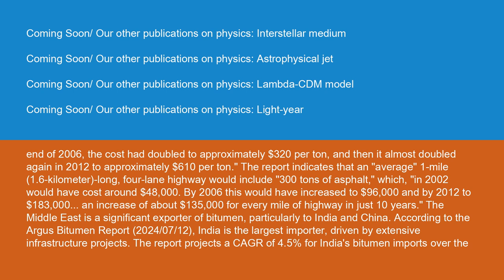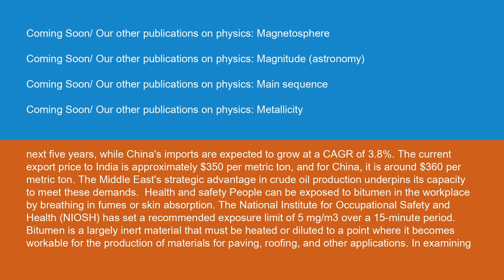The Middle East is a significant exporter of bitumen, particularly to India and China. According to the Argus Bitumen Report of July 2024, India is the largest importer, driven by extensive infrastructure projects. The report projects a CAGR of 4.5% for India's bitumen imports over the next five years, while China's imports are expected to grow at a CAGR of 3.8%. The current export price to India is approximately $350 per metric ton, and for China it is around $360 per metric ton. The Middle East's strategic advantage in crude oil production underpins its capacity to meet these demands.